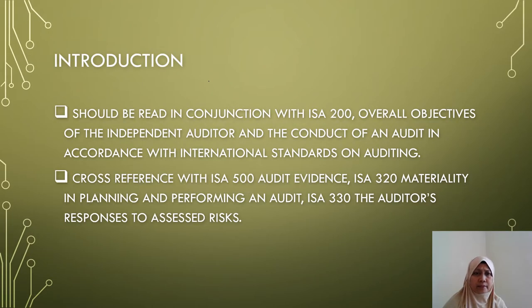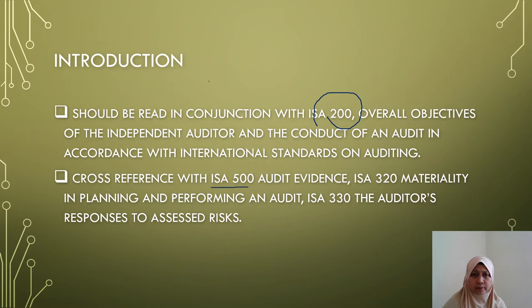There is a need to read RSA 530 together with RSA 200, which is on the overall objectives of the independent auditor, and also cross-reference with RSA 500, which is on audit evidence; RSA 320, which is on materiality in planning and performing an audit; and also RSA 330, the auditor's responses to assessed risk.